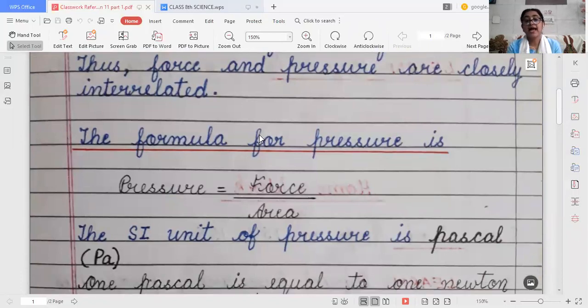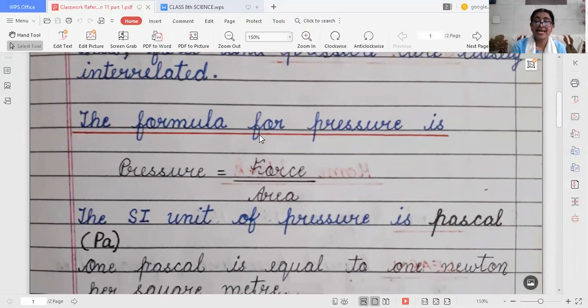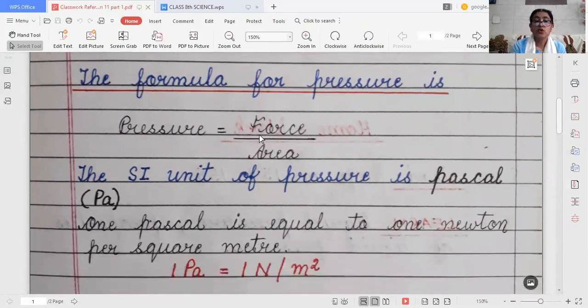The SI unit, the standard unit of pressure is Pascal, which we can write as Pa. So one Pascal is equal to one Newton per square meter, because the SI unit of force is Newton and for area it is meter square. So one Pascal is equal to one Newton per meter square.